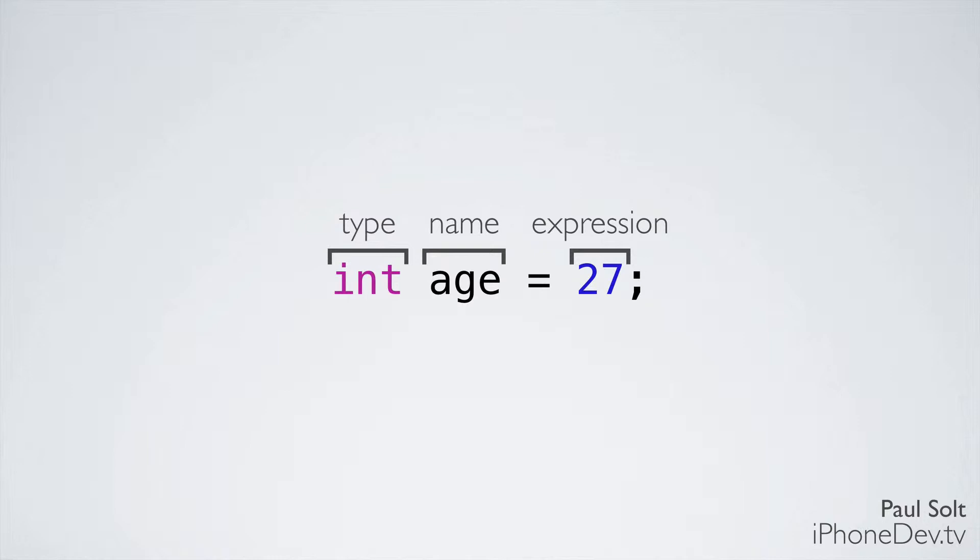The next part is the expression. In this case, it's just 27, but we could also have something like 27 plus 1. The expression can be evaluated and the result is returned. If it was 27 plus 1, that would evaluate to 28. The expression is stored in our named variable, age, and we use the assignment operator. The equal sign is the assignment operator, an arrow that points from the right side to the left side. Anything on the right side will be stored in the left side, which is our variable.